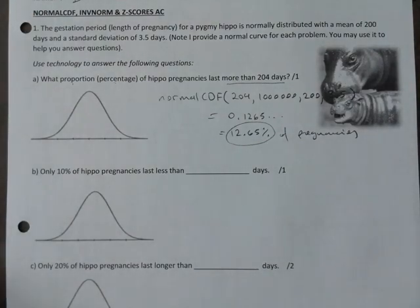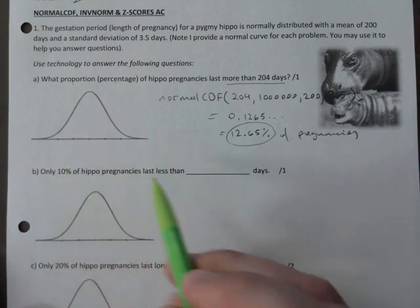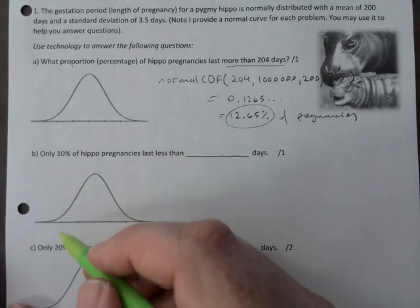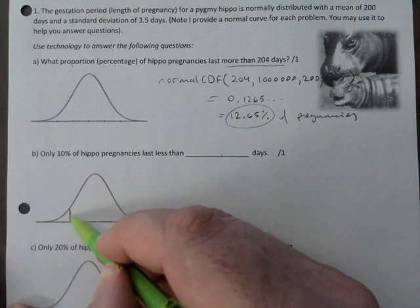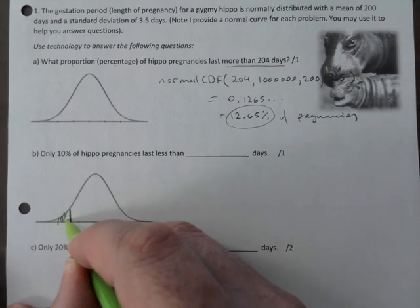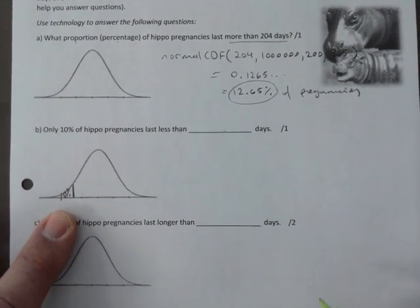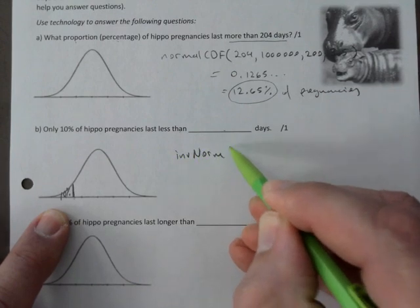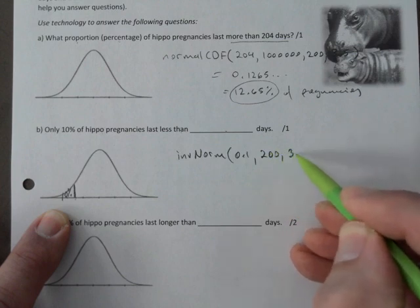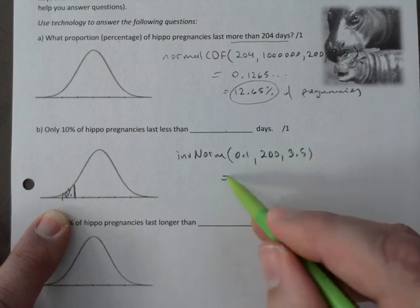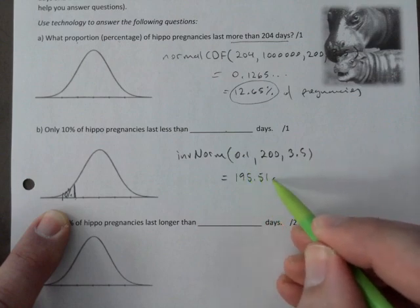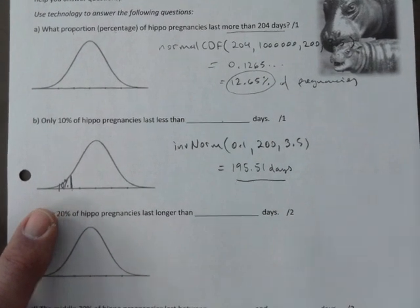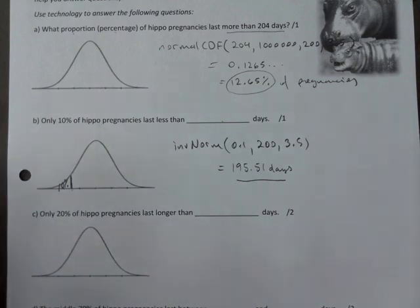Next, only 10% of hippo pregnancies last less than this many days. The 10% would be over here, that's the assumption that the 10% goes there, because 10% lasts less than this amount. So inverse norm, you go 0.1 and then you go 200, 3.5 and that would be 195.51 days. We're talking days here, so it's okay to have it as a decimal. One mark so far for each.